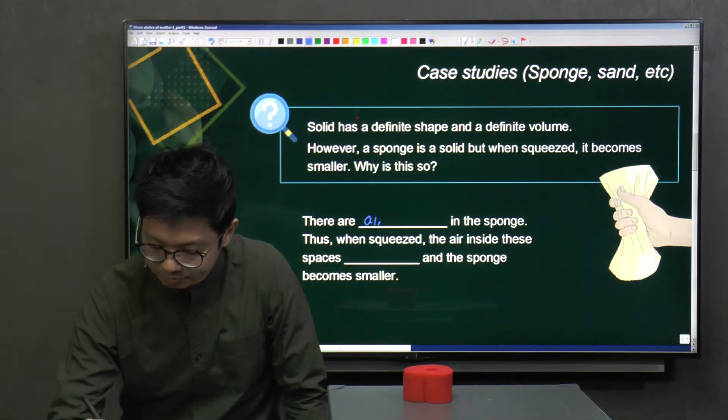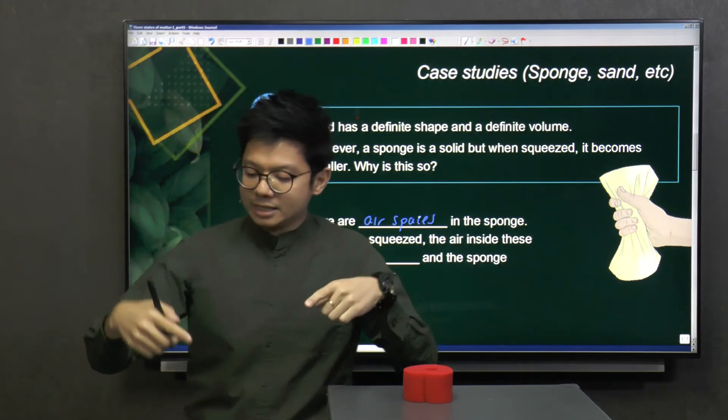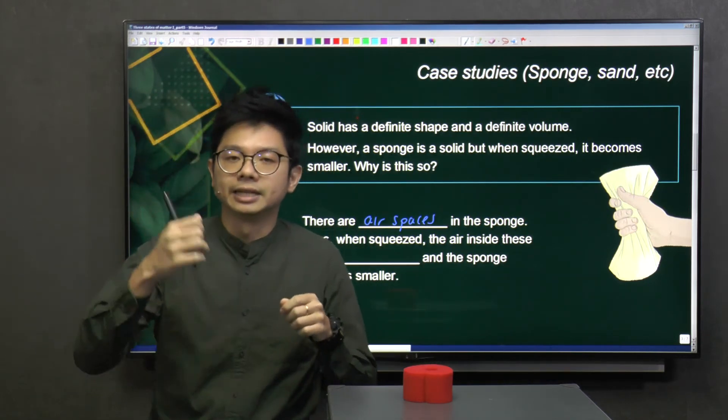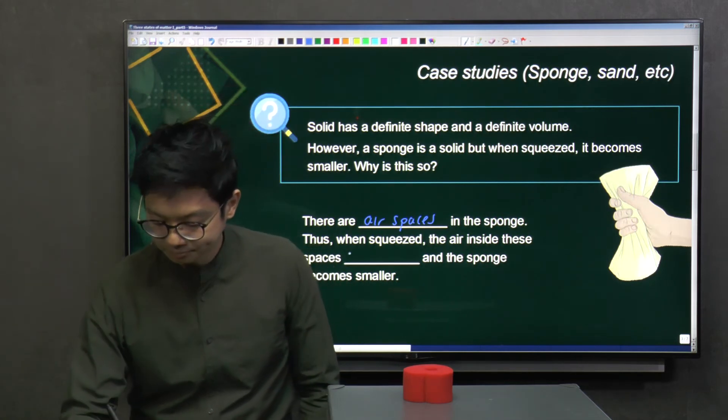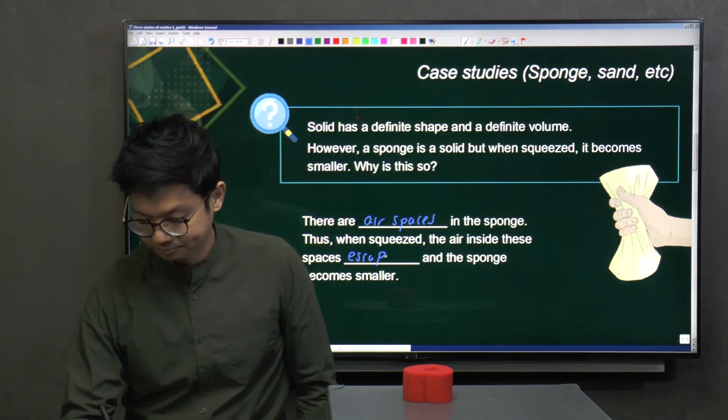And when squeezed, the air inside these spaces actually escapes. So the sponge becomes smaller.